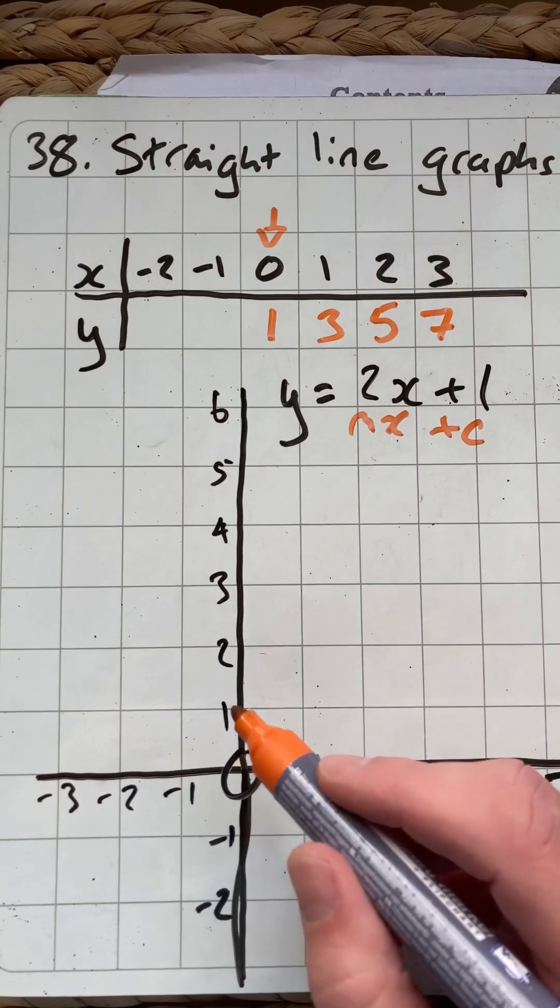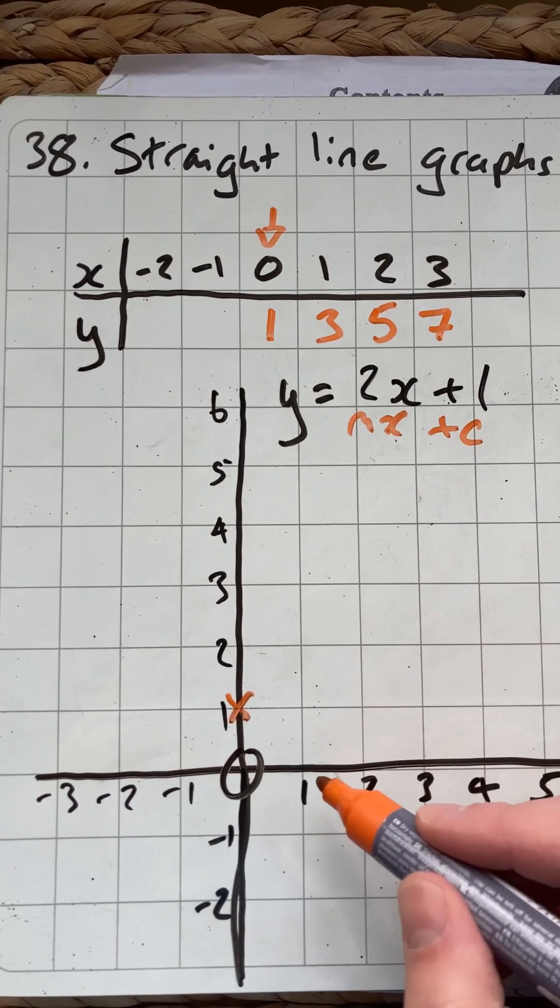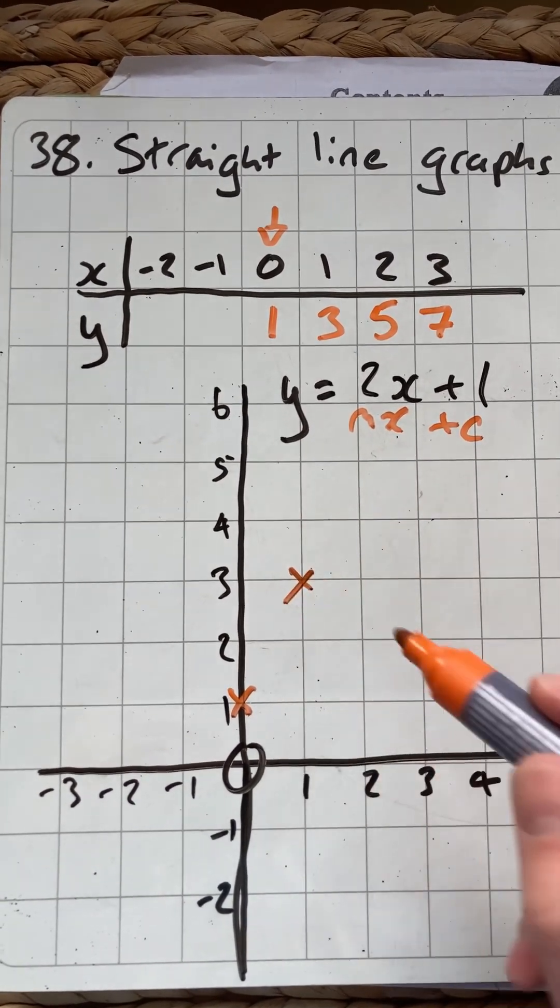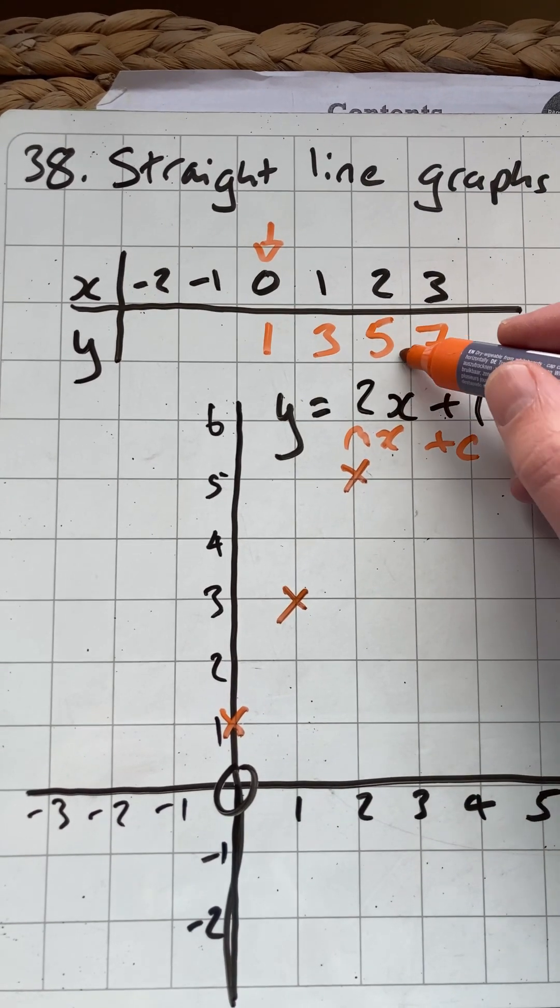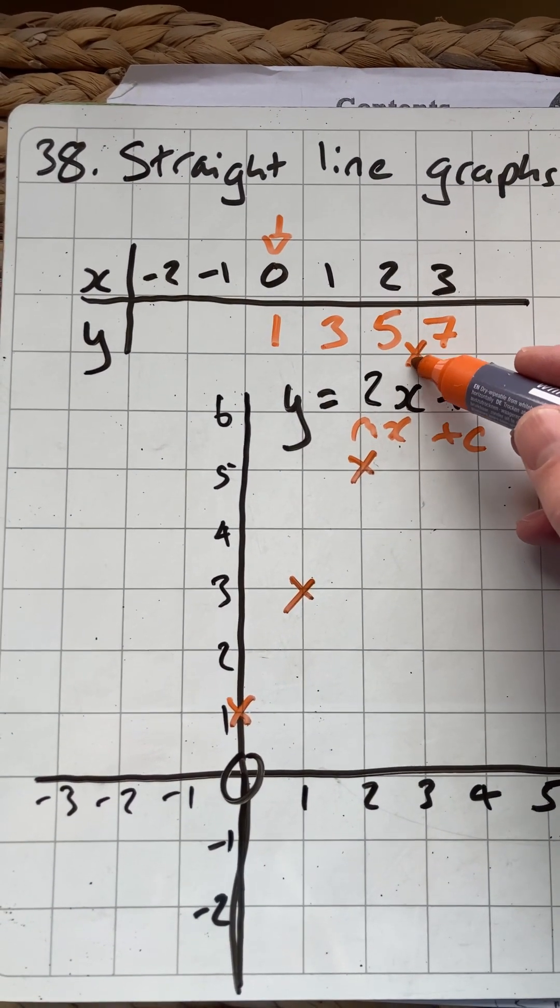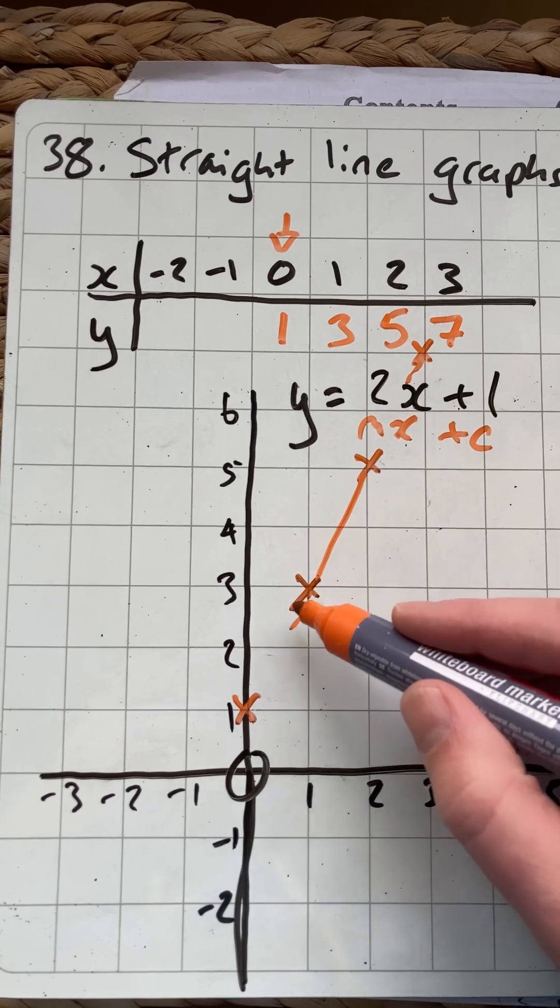We could plot those just to see how we're doing. 0 and 1 is there, 1 and 3 is there, 2 and 5 is there, and I don't have enough on my graph, but 3 and 7 would be up there. And we could connect those with a straight line.